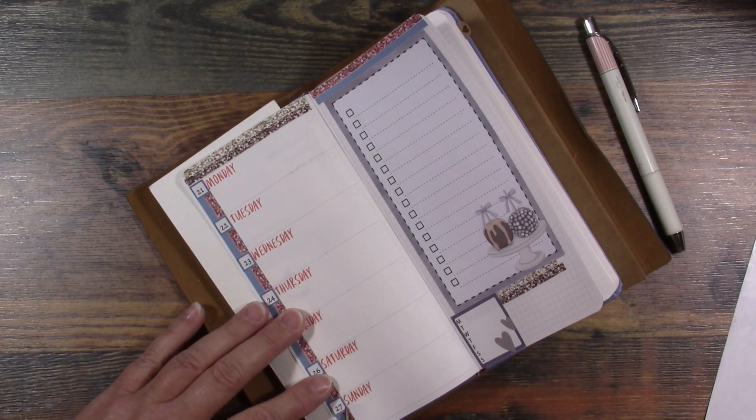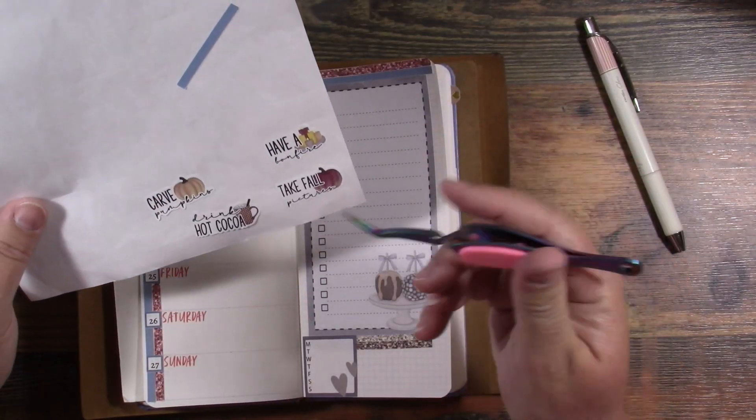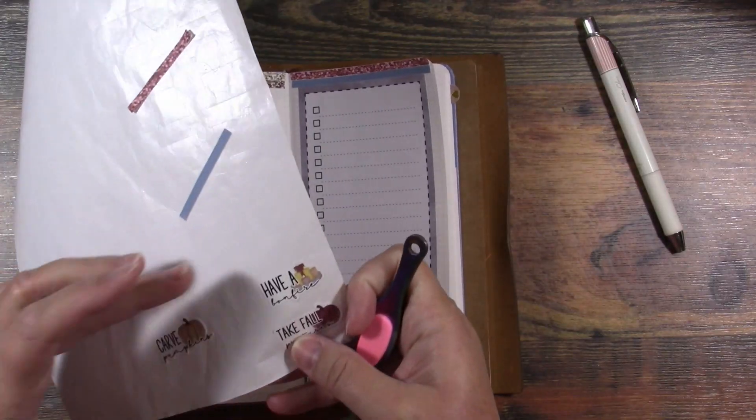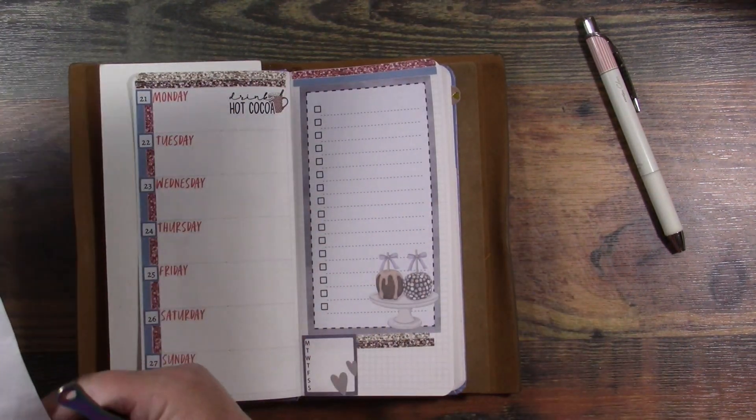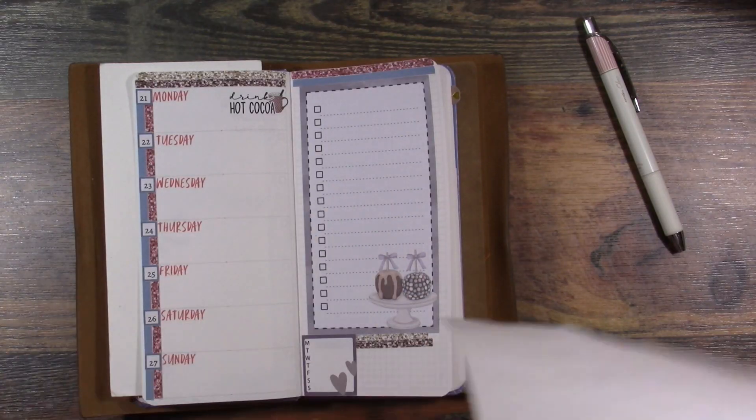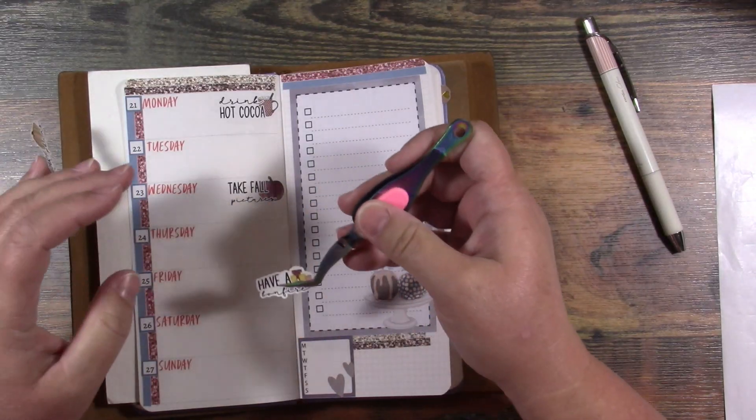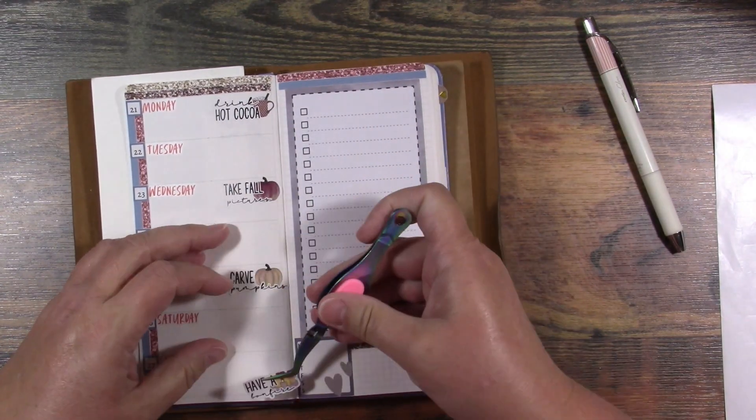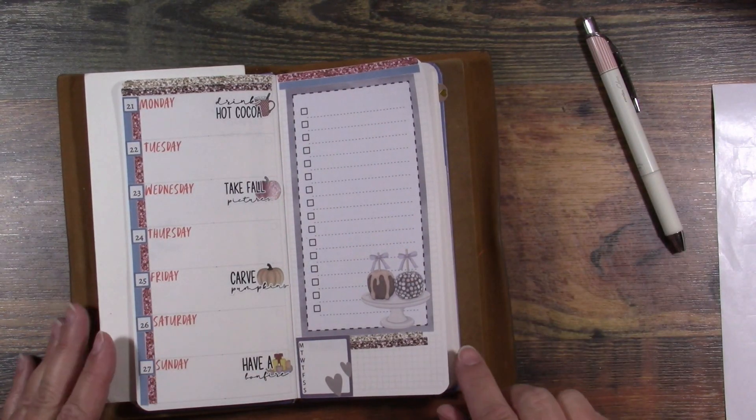Okay, now that's done. I had these that I just need to use up because they've been hanging out in the reusable sticker book. This one says drink hot cocoa, take fall pictures, carve pumpkins, and have a bonfire. I think that's cute. These were from a bucket list thing.